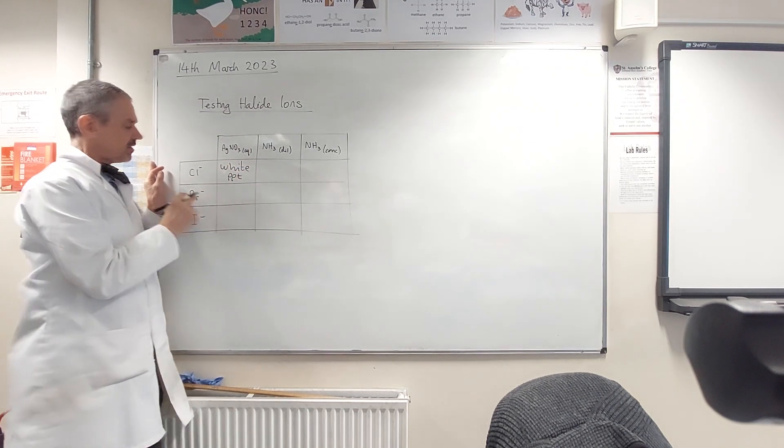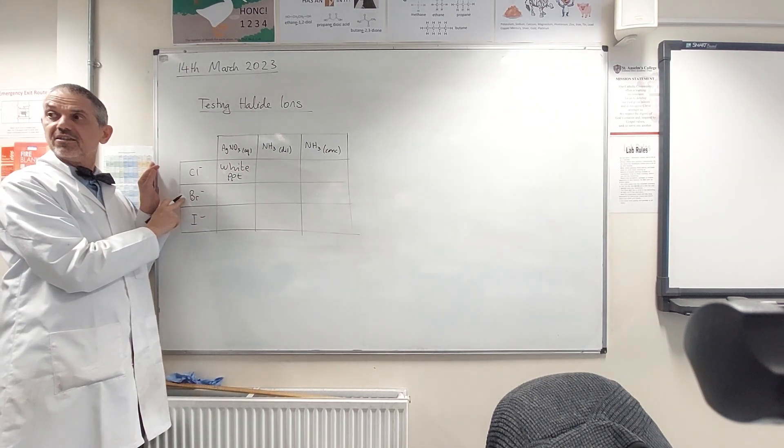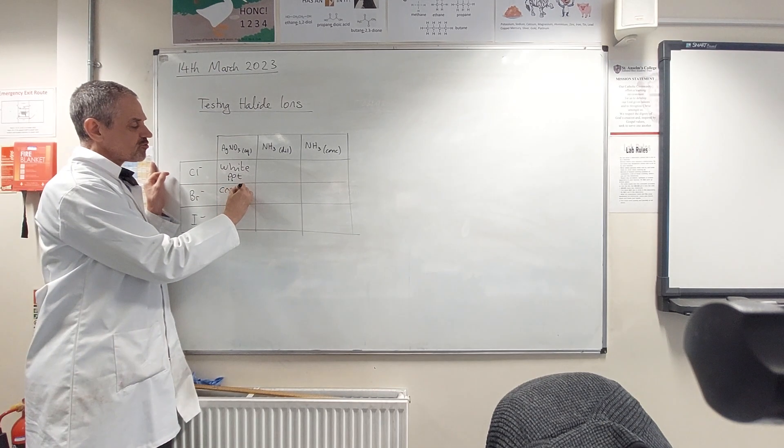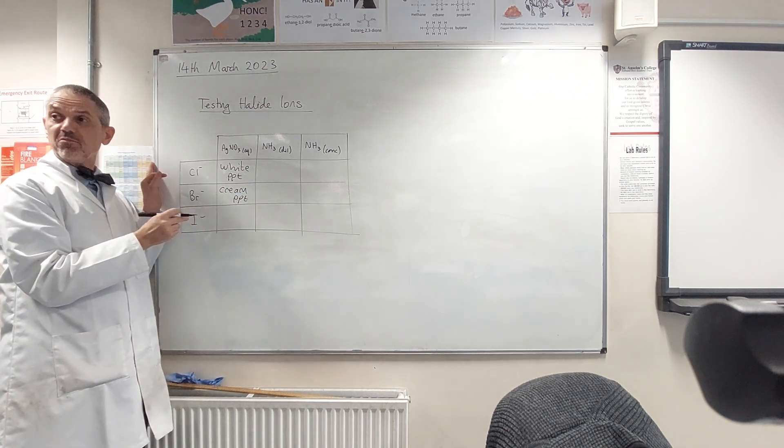Browns. Okay. Bromide. Pale yellow precipitate form. Yeah, it goes down in the books as cream to distinguish it from...